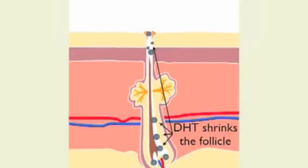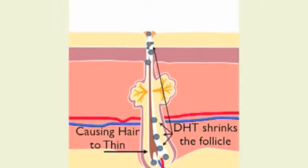and DHT binds to them to regulate hair growth in these areas. However, some people inherit a condition where these receptors are also found on the hair follicles at their head. Over time, DHT builds up at these follicles and thins, weakens, and sometimes even prevents hair growth altogether.